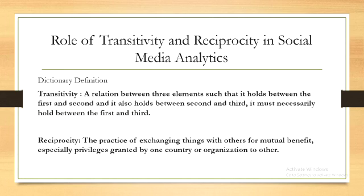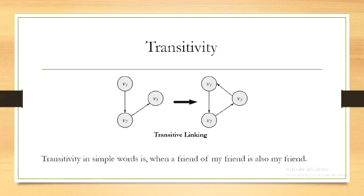Now let's study these terms one by one in detail. Our first term is transitivity. In transitivity we analyze the linking behavior to determine whether it demonstrates transitive behavior. For example, in a graph wherein V1 is related to V2 and V2 is related to V3, as per transitivity V3 is also related to V1.